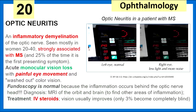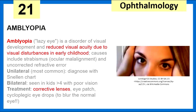Optic neuritis — an inflammatory demyelination of the optic nerve, seen mostly in women aged 20 to 40, and strongly associated with MS. There's acute monocular vision loss with painful eye movement and washed-out color vision. Fundoscopy is normal because the inflammation is behind the optic nerve head. We treat with IV steroids. Amblyopia — lazy eye — is reduced visual acuity caused by strabismus or uncorrected refractive error in a child. Treatment is with corrective lenses, eye patch, and cycloplegic eye drops to blur the normal eye.